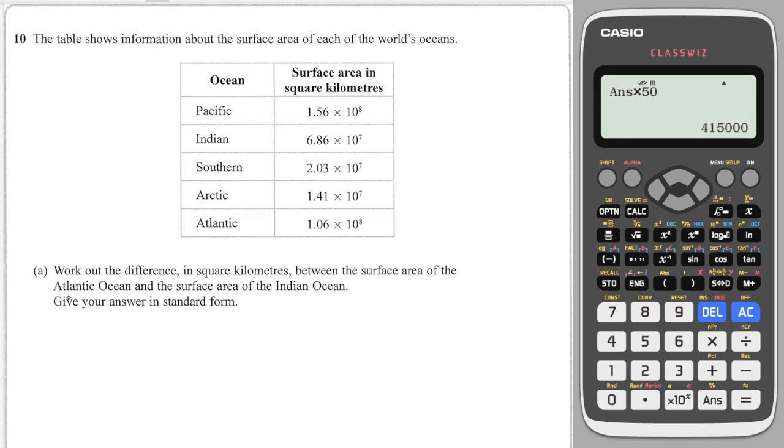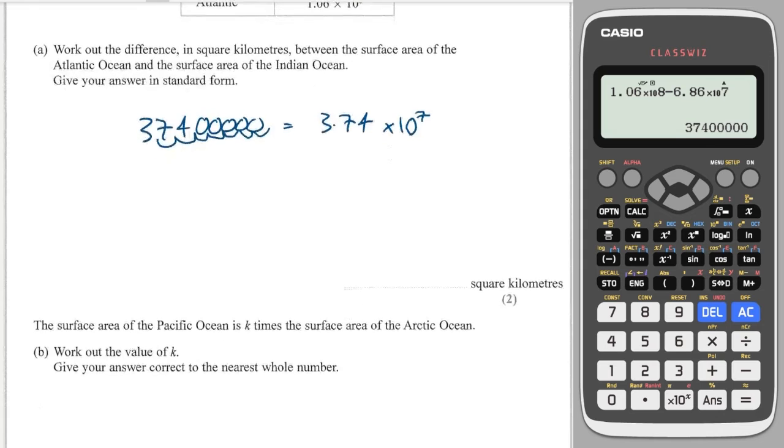Question 10. We've got all this information, and it says, work out the difference between the surface area of the Atlantic and the surface area of the Indian Ocean. So again, you go to your calculator. The larger one is the Atlantic. It's times 10 to the 8, where Indian is times 10 to the 7. So you do the Atlantic minus the Indian. And we get 3, 7, 4, with 1, 2, 3, 4, 5 zeros. And in standard form, that would be 3.74, 1, 2, 3, 4, 5, 6, 7.